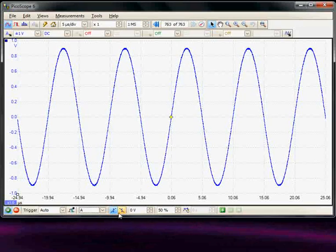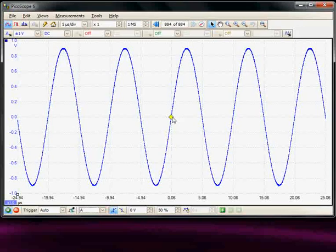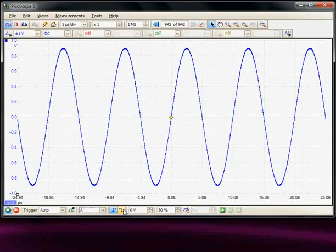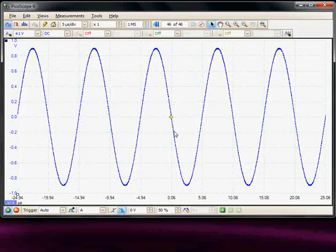The following two icons are the rising and falling edge for the trigger. At the moment it's triggering on the rising edge, and we could trigger on a falling edge. Here we're triggering on the negative edge.